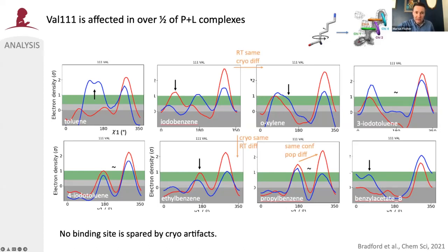This may indicate that room temperature could overcome the kinetic trapping that this residue experiences and the MD dependence on the starting conformation. Among these very related ligands analyzed, comparing two examples, the room temperature conformation of valine 1.11 is the same whereas the cryo one differs. The opposite is true comparing iodobenzene to ethylbenzene — the cryo structure remains the same while the room temperature is different. It can also be more subtle, where the conformations are the same but the relative occupancy, the relative population, changes.